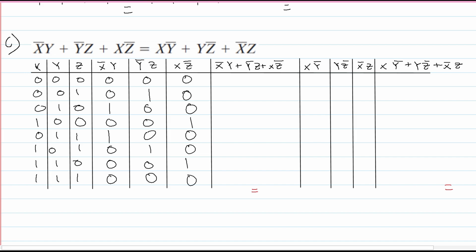Now let's add them all together. For this big left-side sum column, we have a 0, then 1, 1, 1, 1, 1, 1, and lastly a 0. So we kind of got a 1-sandwich with 0 as our bread.